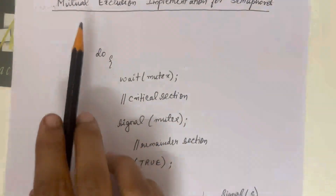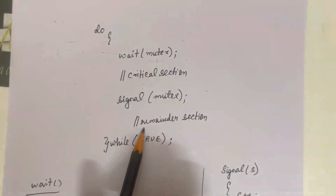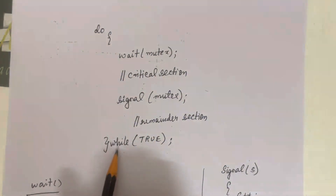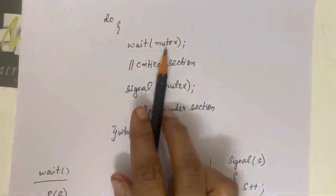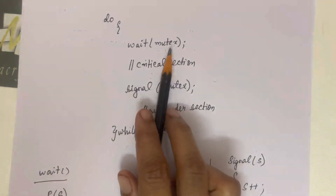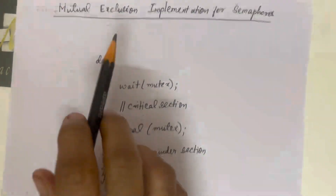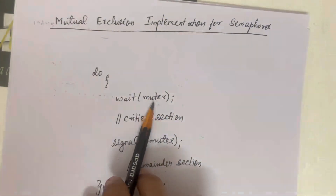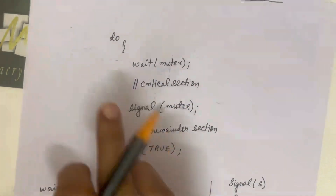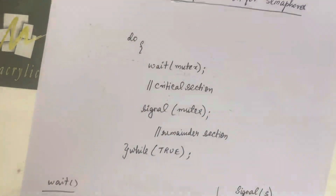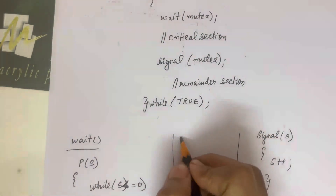For implementing mutual exclusion, the code is: wait(mutex), critical section, signal(mutex), remainder section, then close the loop with while(true). Here, 'mutex' is the semaphore variable used — since it represents mutual exclusion, it is named mutex. Initially, the value of mutex will be 1.